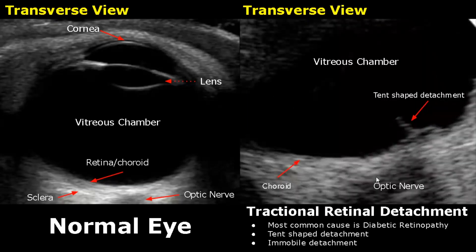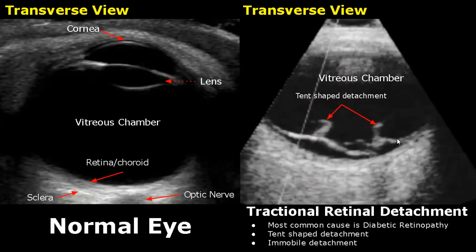Tractional retinal detachment usually occurs in diabetic patients, and the most common cause is diabetic retinopathy. A tent-shaped detachment is seen, and this detachment is immobile — it will not move around. Here is another case showing two tent-shaped detachments, which will also be non-mobile.